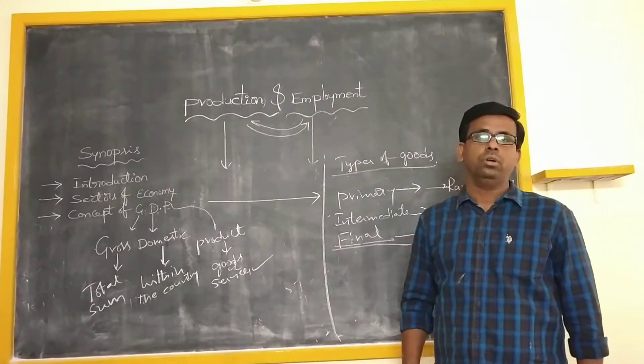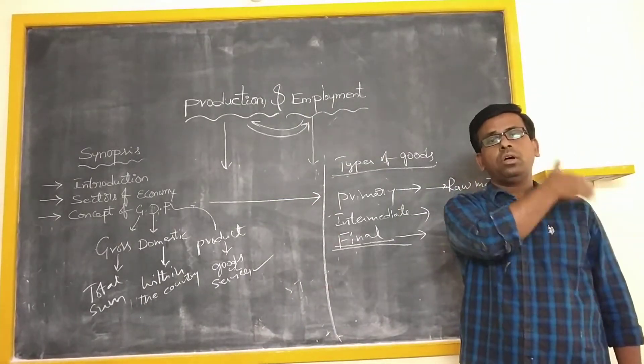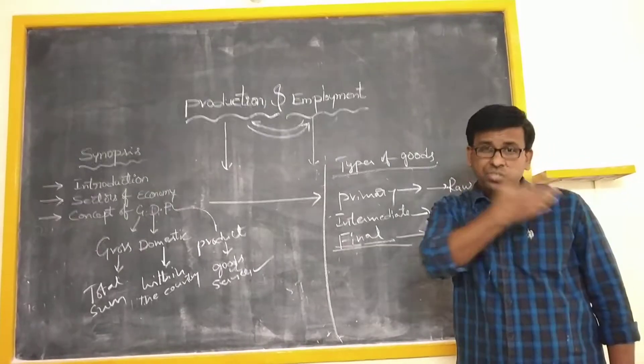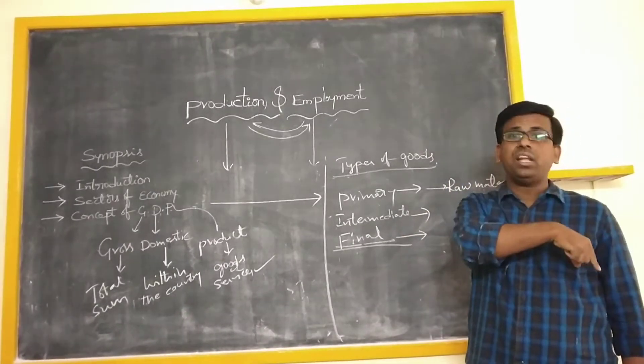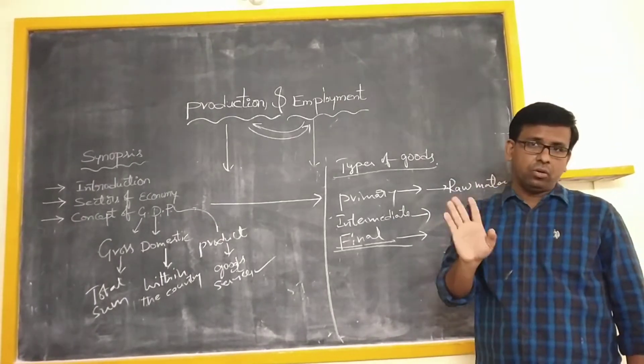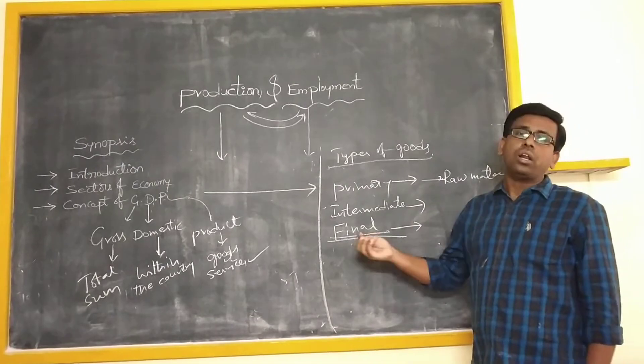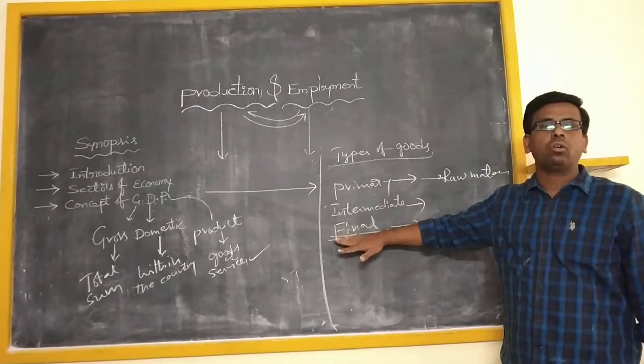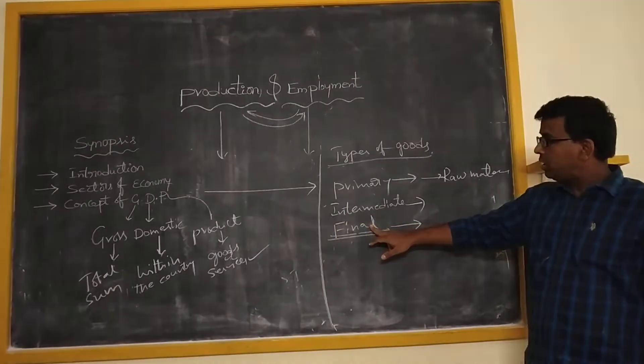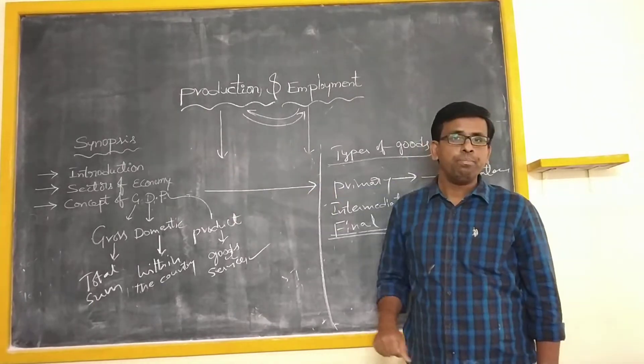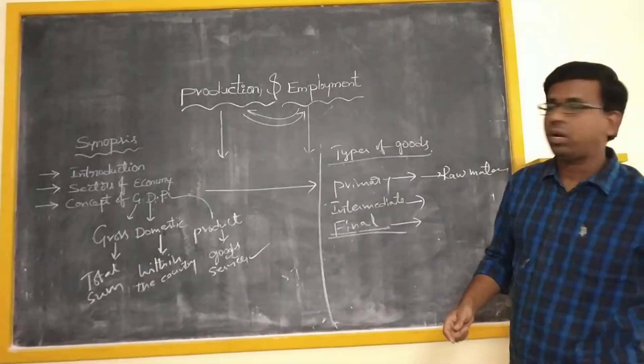That will become a final good. And at the time of farmers, where we purchase the grains, those are not readily available for consumption. Such type of goods are not called final goods. The final goods are which are readily available for our consumption or for our usage. Such type of goods are called final goods. This word is being used in our definition GDP. Now one more term which I used in our definition is market value.